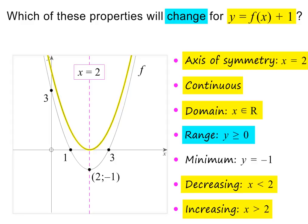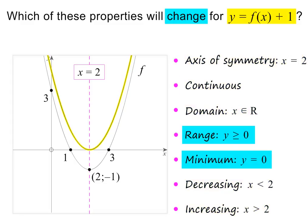What does change is the range, because the vertical shift changes the y-coordinate of the turning point. The range is now all real values of y greater than or equal to 0. And the other property that changes is the minimum value, again because the vertical shift changes the y-coordinate of the turning point. In other words, only two properties will change when a parabola is shifted vertically.